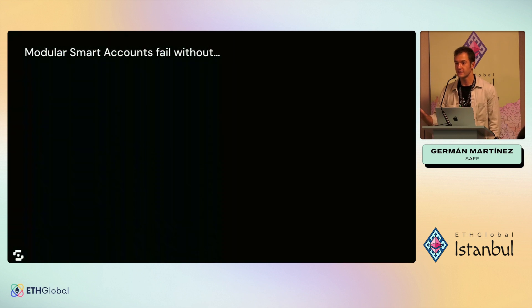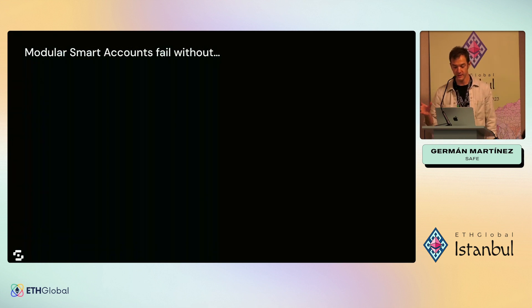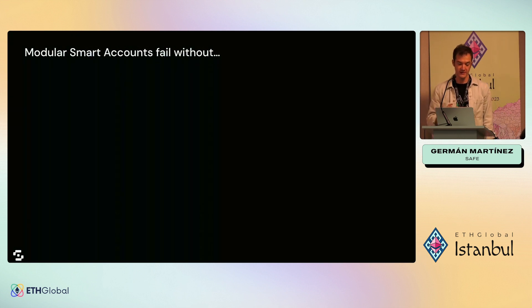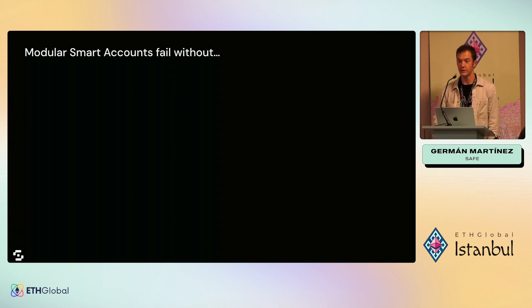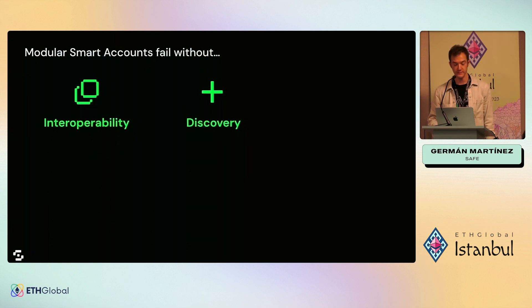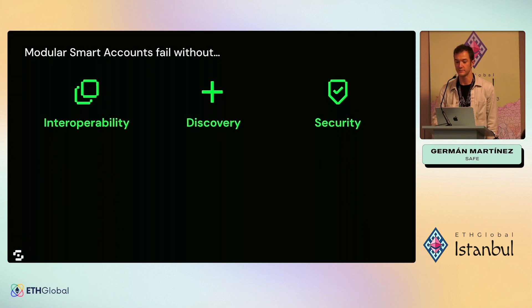So it all starts with three premises: modular smart accounts will fail without three things — interoperability, discovery, and security.